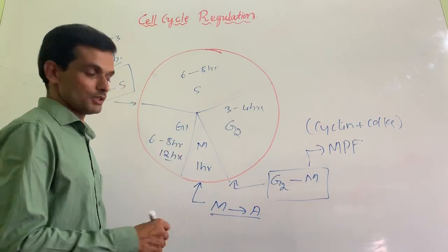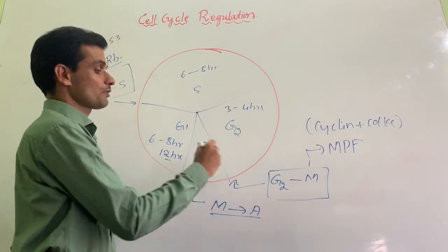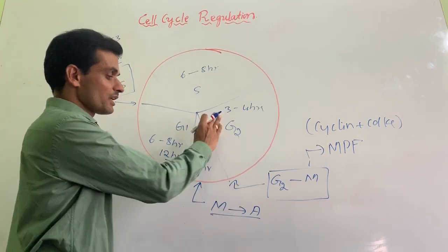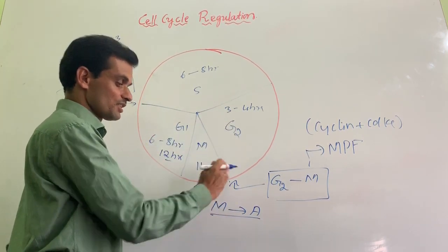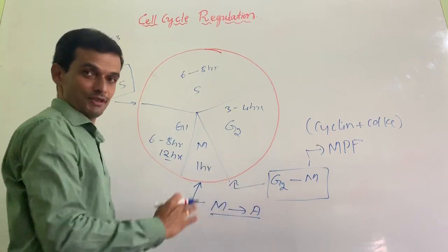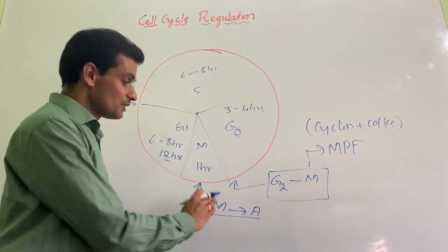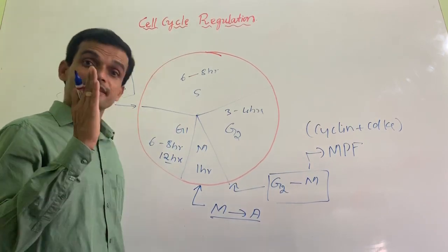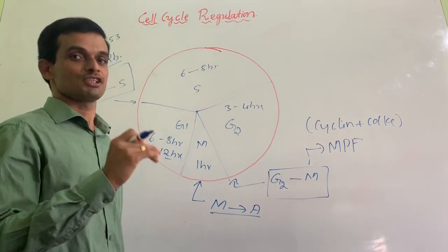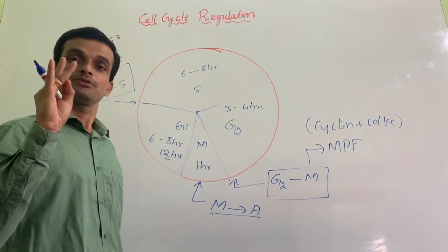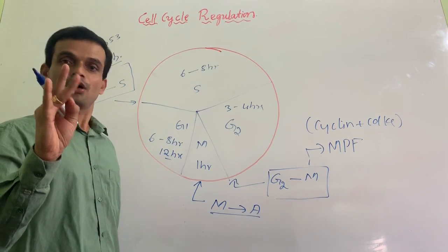The third stop is here, that is after metaphase, before anaphase. Why does the cell stop the cell cycle in this transition phase? It's a transition phase after metaphase, before anaphase stage. This will make sure that the cell has prepared sufficient spindles, and secondly, spindles are attached to the kinetochore of the chromosomes.